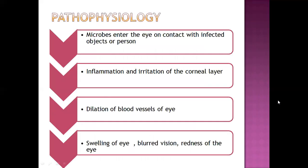Pathophysiology of keratitis: the infection starts when microbes enter the eye on contact with an infected object or person. Infective organisms are transmitted into the body and reach the eye, starting infection. Once microorganisms begin to grow and multiply, there is inflammation and irritation of the corneal layer — inflammation visible from outside, and irritation characterized by continuous itchiness and difficulty in vision.